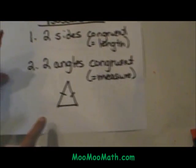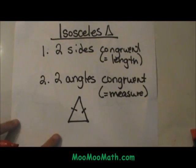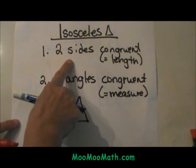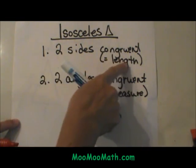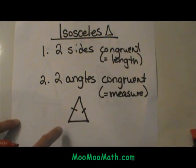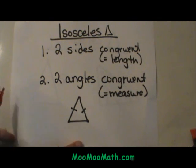Let's look at the rules of isosceles triangles. An isosceles triangle is a triangle that has two sides that are congruent, which means equal length, or two angles that are congruent or have equal measure. So it can look like this.